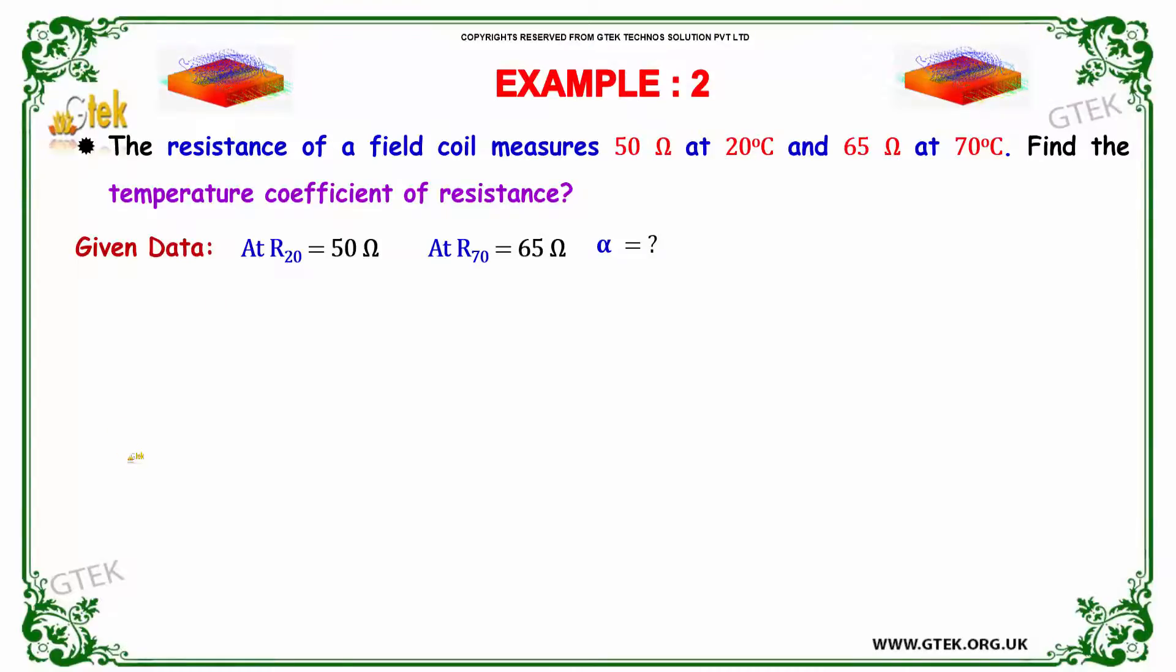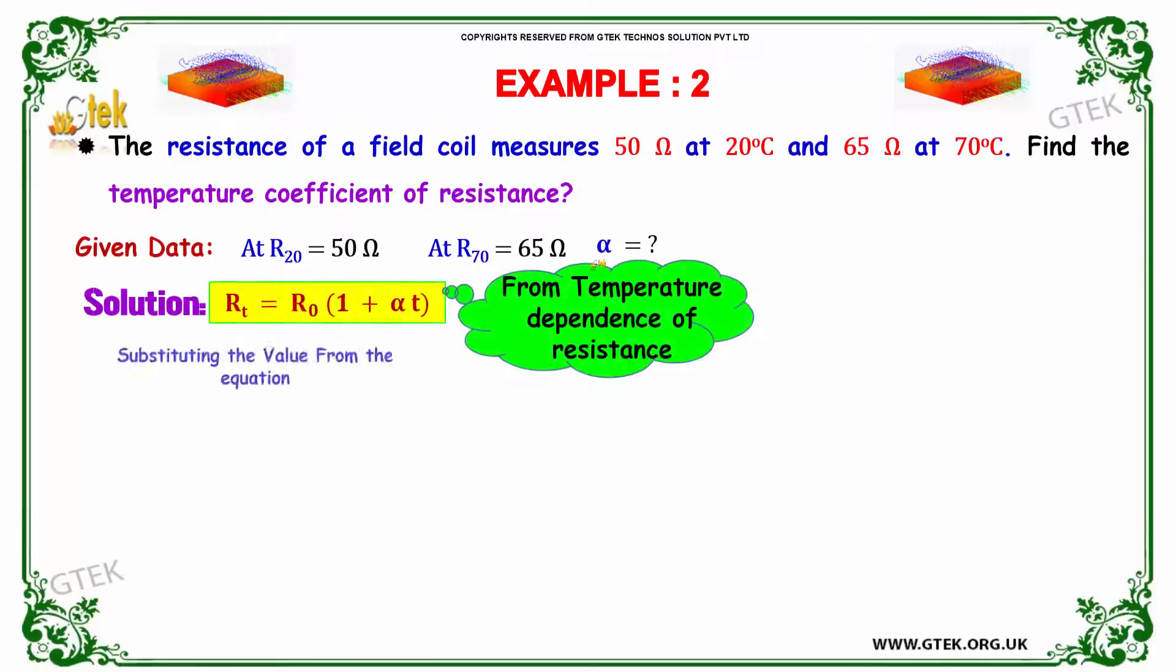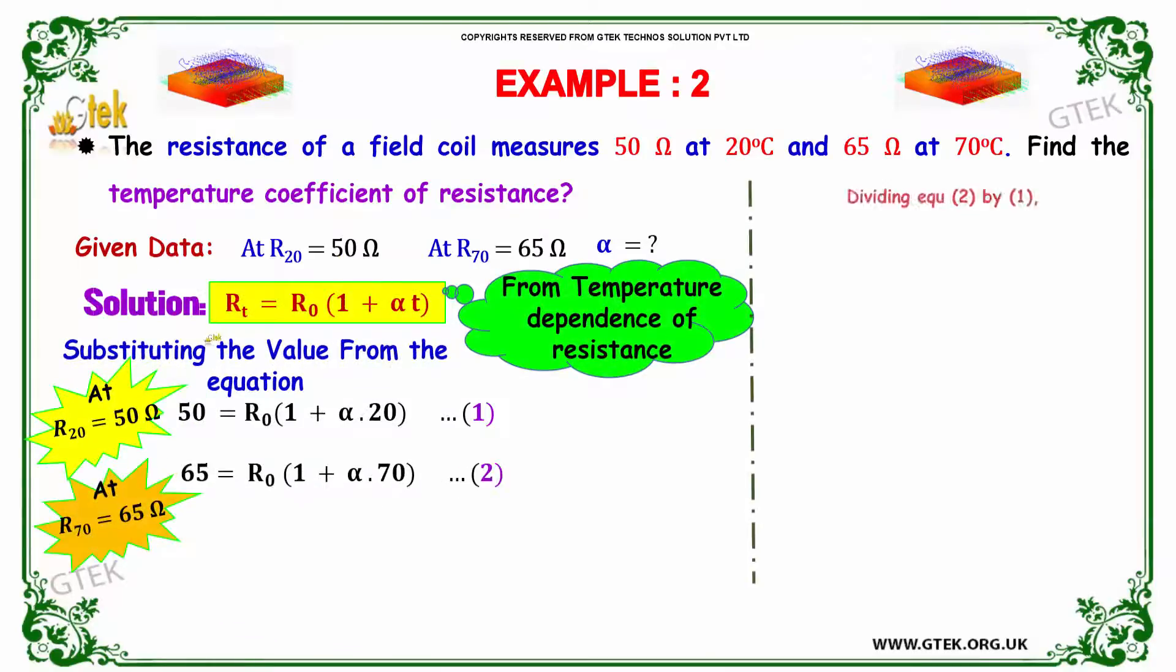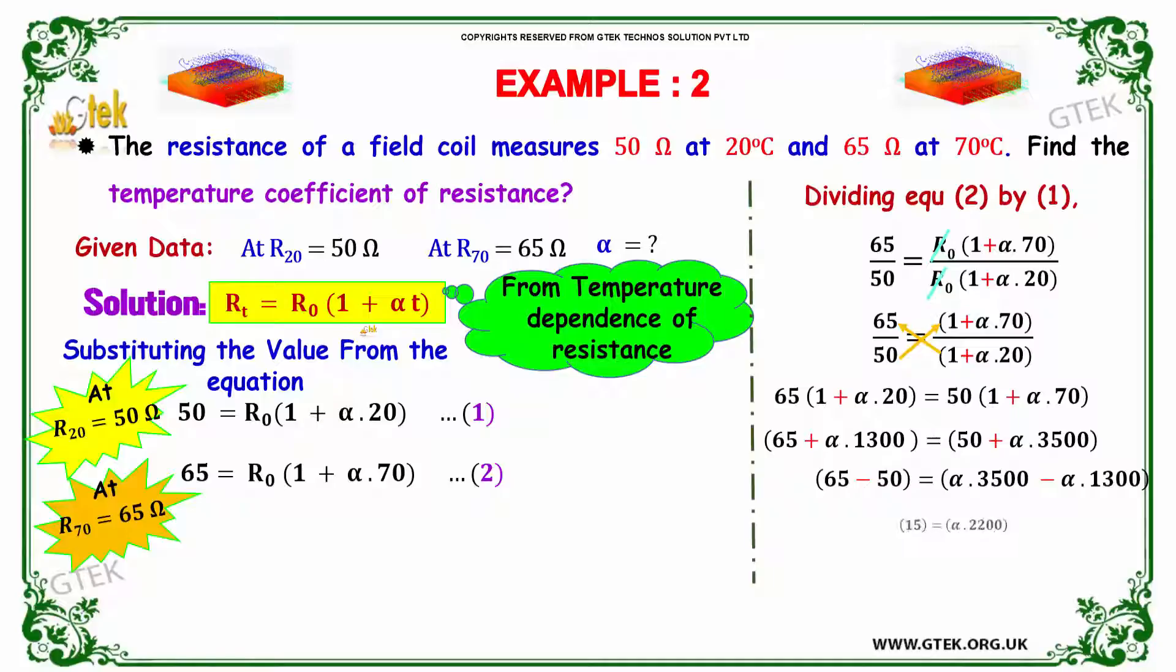So R at 20 degree Celsius is 50 ohm. Resistance at 70 degree Celsius is 65 ohm. We need to identify the temperature coefficient. Here is the solution. R_T is equal to R_0 into 1 plus alpha T.